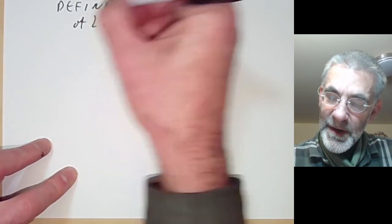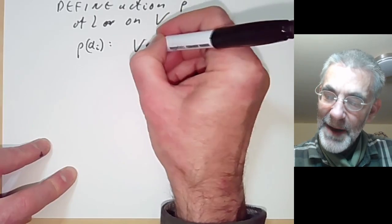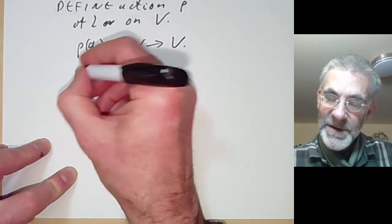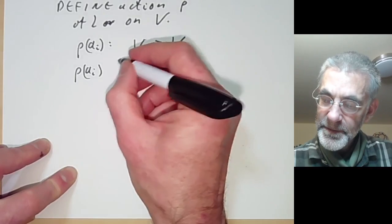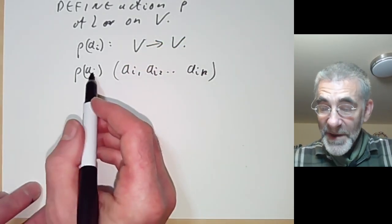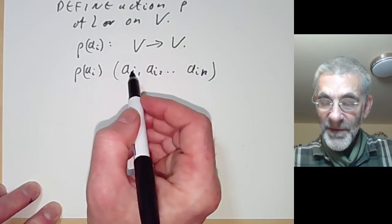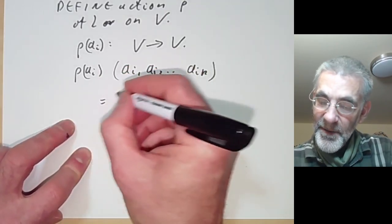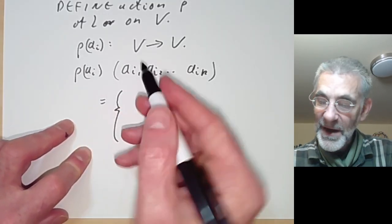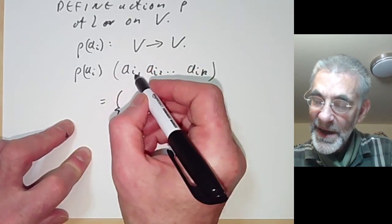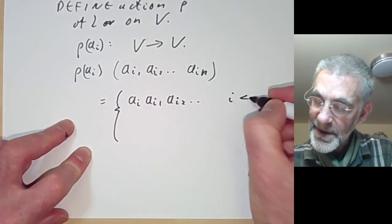We define the action ρ of L on V as follows. The operator ρ(Aᵢ) must map V to V. We want ρ(Aᵢ)(Aᵢ₁ Aᵢ₂ ··· Aᵢₖ) to be multiplication by Aᵢ in U(L). If i ≤ i₁, we simply define ρ(Aᵢ)(Aᵢ₁ Aᵢ₂ ···) = Aᵢ Aᵢ₁ Aᵢ₂ ···, since i ≤ i₁ keeps the subscripts in order.